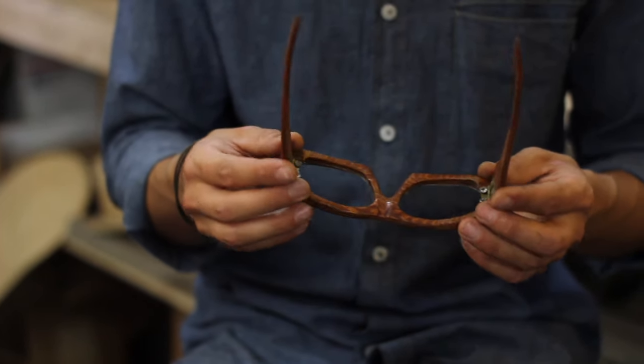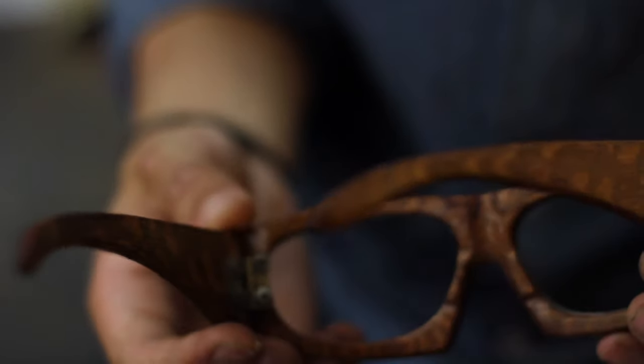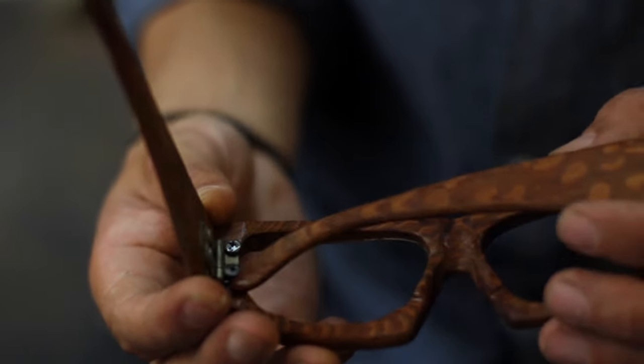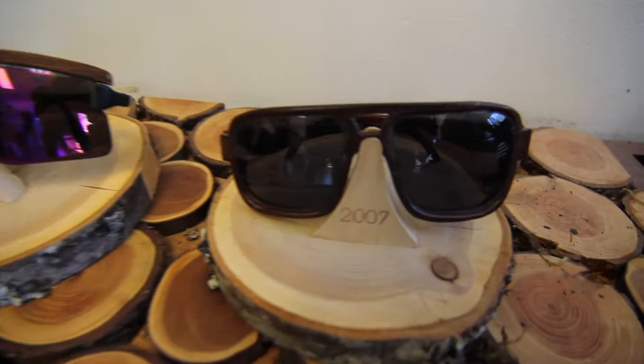This is one of the first pair of sunglasses that I ever hand carved about six years ago, playing around with this tree branch in my backyard. You can see the old hinges in here, they're stolen off the cabinet sink in the bathroom. I wore them down to the local skate park and everybody was just tripping on them.